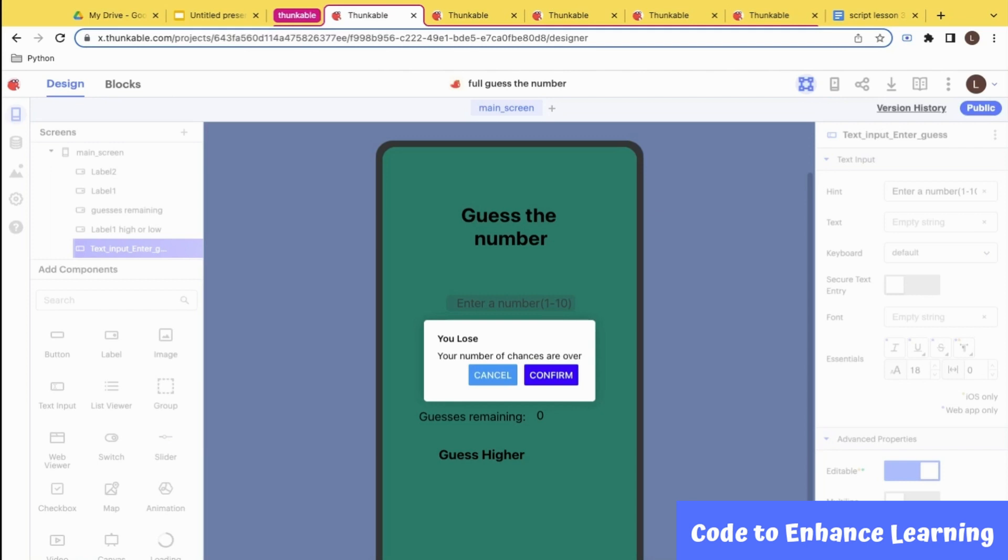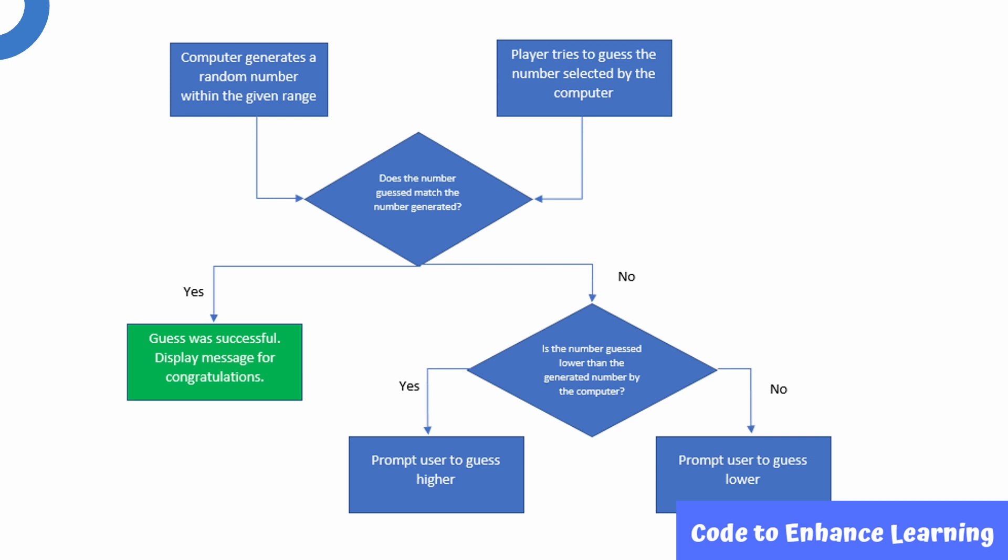Let us take a look at the workflow or the logic that we are going to apply. The application will randomly generate numbers in the given range when the app is made to run. If the number guessed by the player is matching the number randomly generated by the app, the player gets a congratulatory message for the right guess. If the number guessed is lower, then the player is prompted to guess higher.